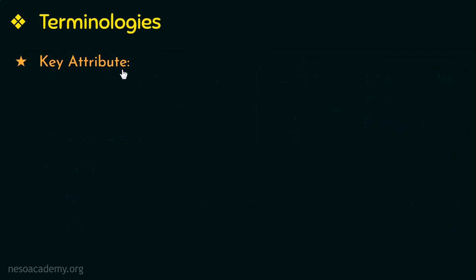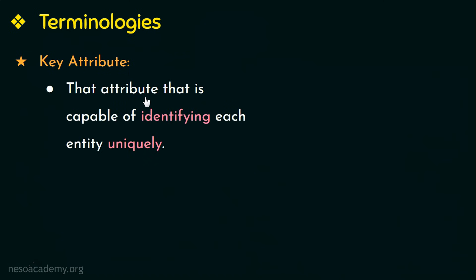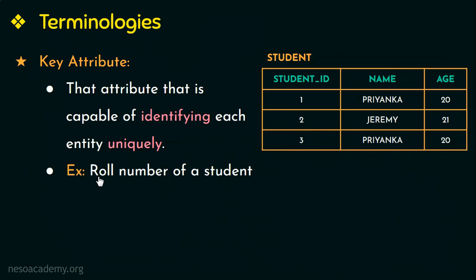Next, let us see what a key attribute is. A key attribute of a particular entity type is that attribute which is capable of identifying each entity uniquely. For example, the roll number of a student. If two students share the same name and age, we can still identify each one uniquely by their student ID or roll number, since no two students can share the same roll number in a class. So roll number or student ID is a key attribute.